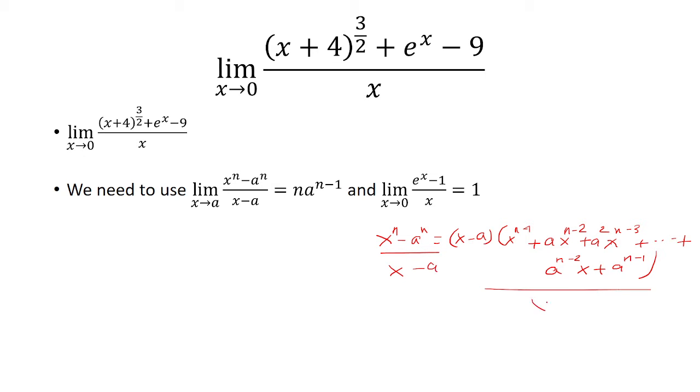Now we want to divide this by x minus a, so these are going to cancel. And so if I let x equal a, because x is approaching a, I'm left with a to the n minus 1 plus a times a to the n minus 2 plus a squared times a to the n minus 3 all the way up to a to the n minus 2 times a plus a to the n minus 1.